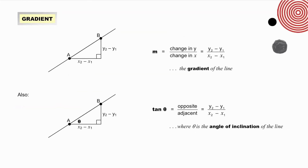The gradient formula. The gradient m is the change in Y over the change in X, which is y₂ minus y₁ (the vertical) over x₂ minus x₁ (the horizontal). Also note that for theta, which is the angle of inclination, tan equals the opposite over the adjacent, which equals y₂ minus y₁ over x₂ minus x₁ — the gradient of the line.